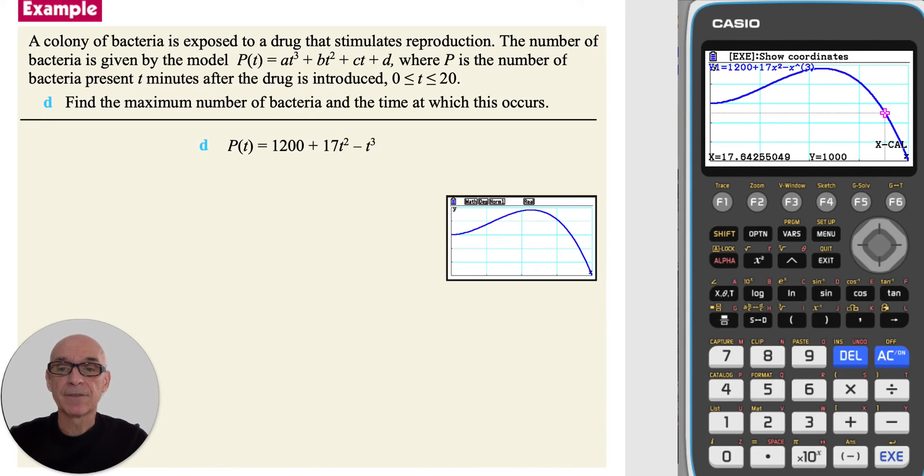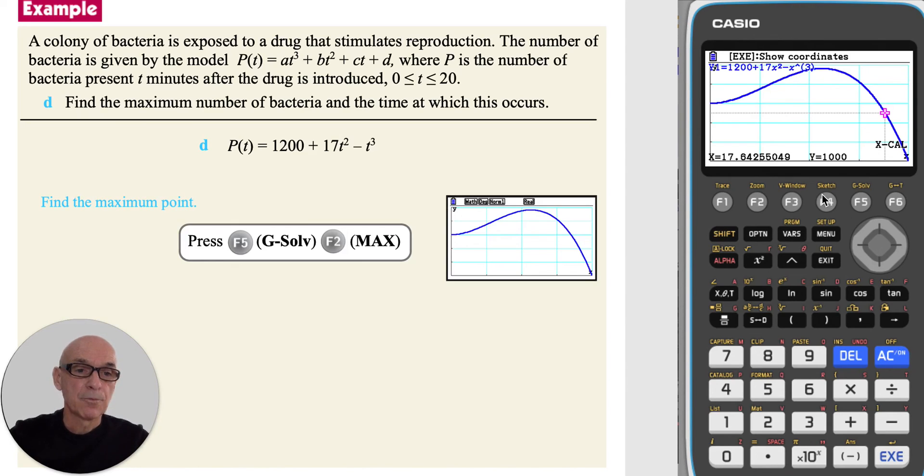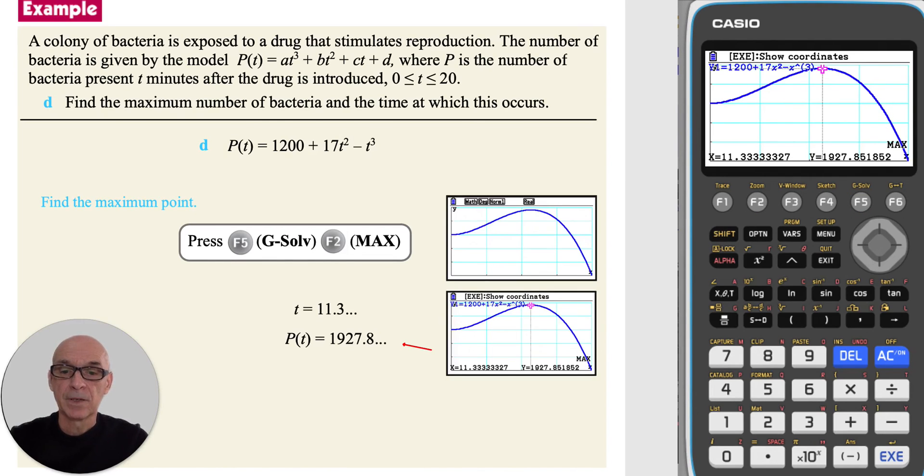In part d, to find the maximum number of bacteria and the time at which this occurs, we need to find the coordinates of the maximum point. Pressing f5, gsolve, and f2, maximum, given the results shown. So the maximum number of bacteria is 1930, and it occurs after 11.3 minutes, correct to three significant figures.